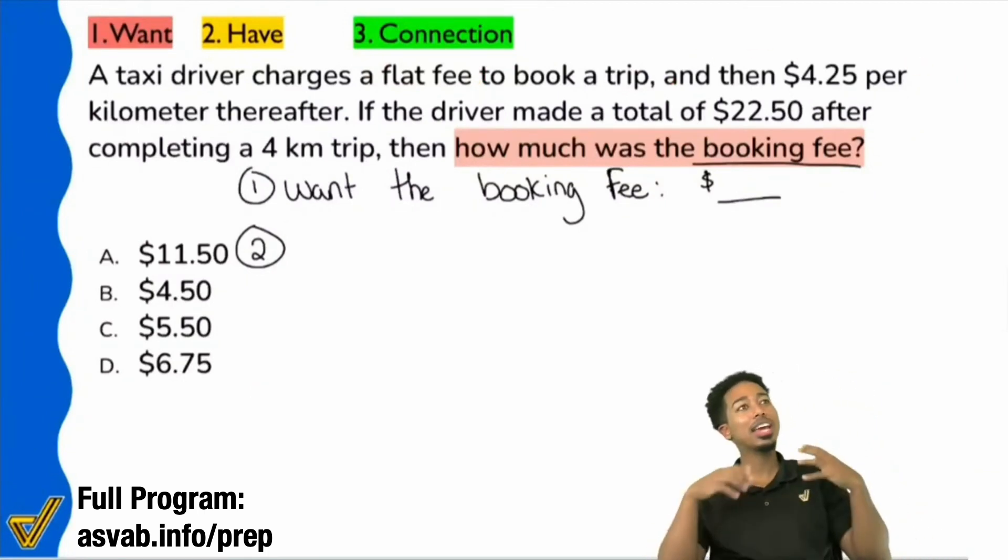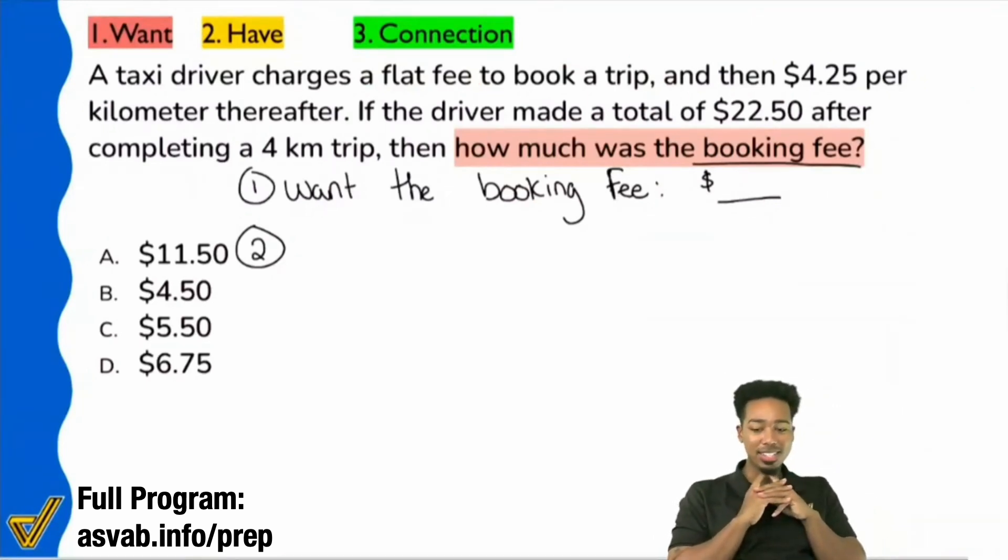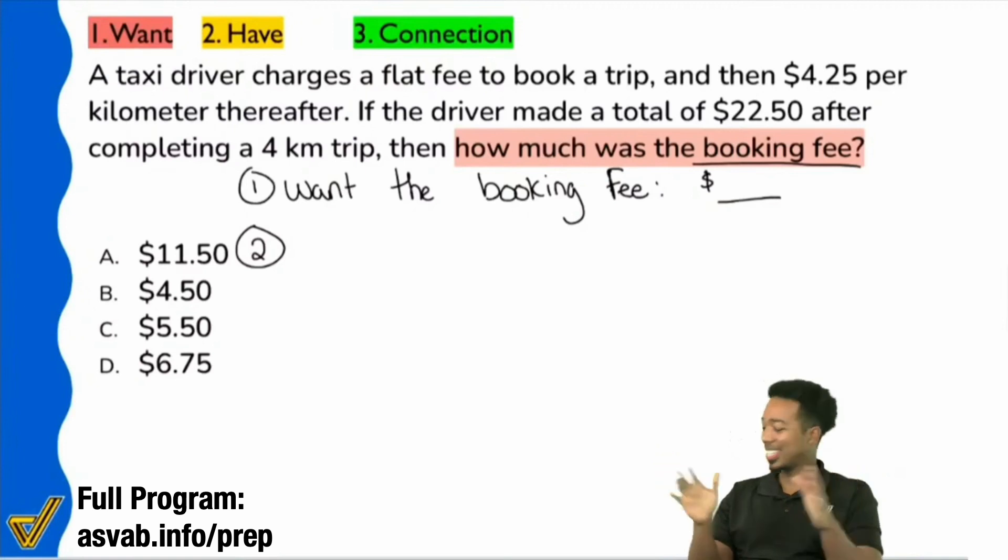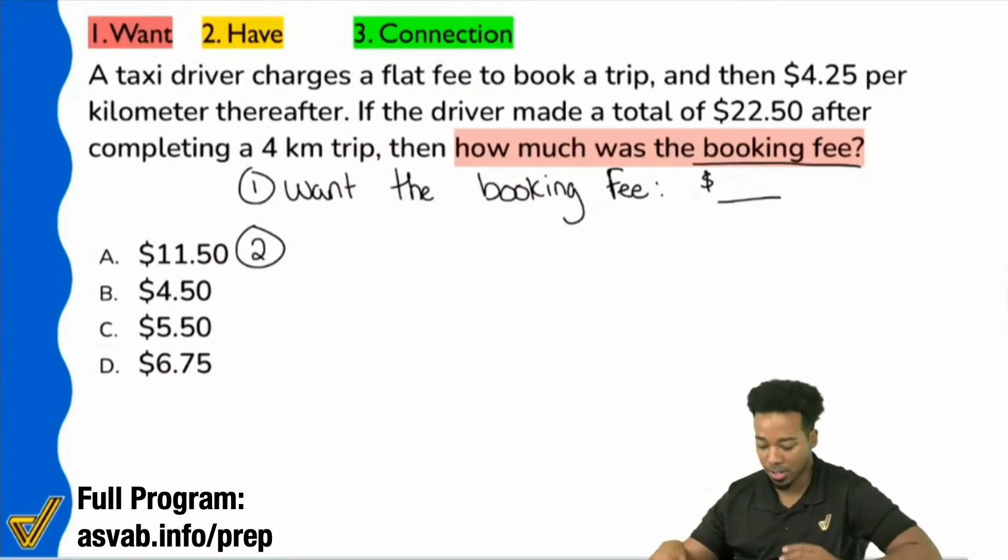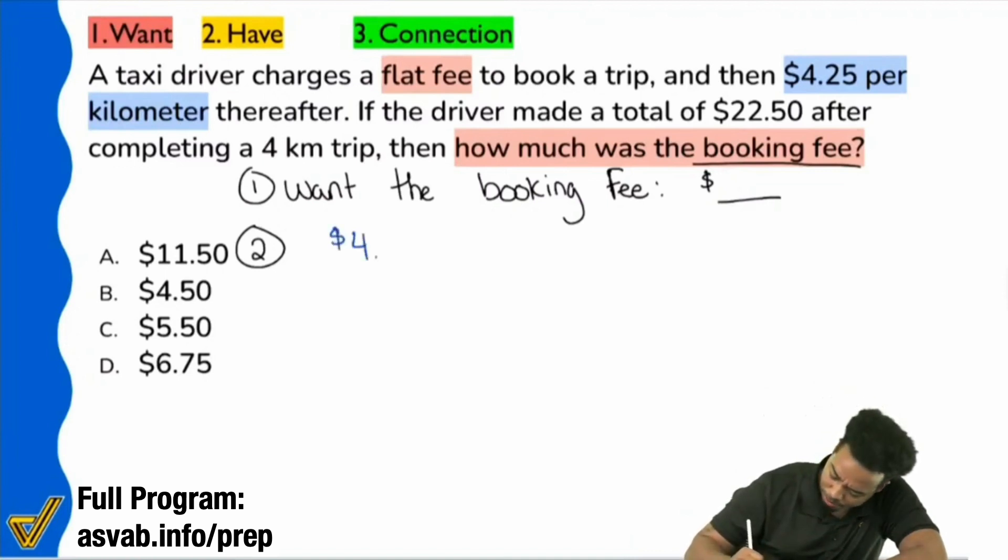It says a taxi driver charges a flat fee to book a trip and then $4.25 per kilometer thereafter. Let's take that slowly. A taxi driver charges a flat fee and then the rate. What does it sound like that flat fee might be then?